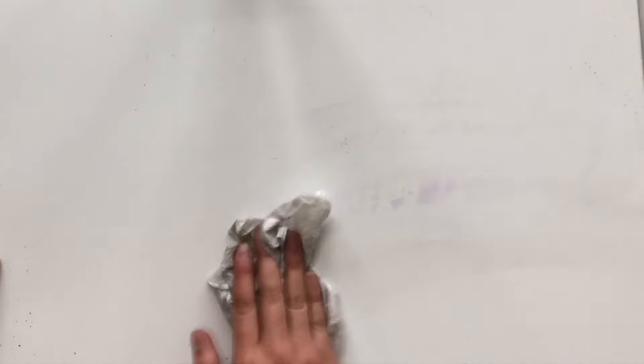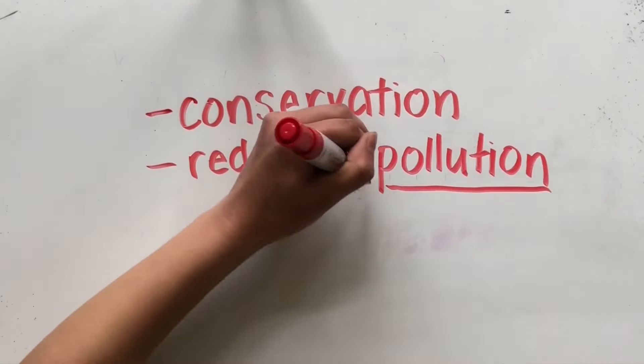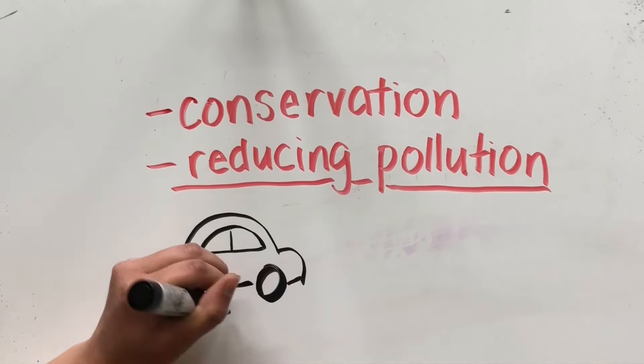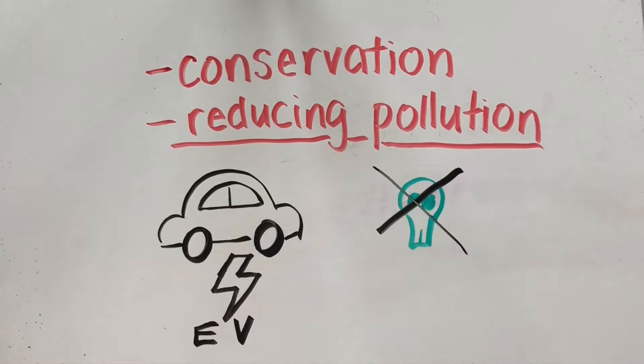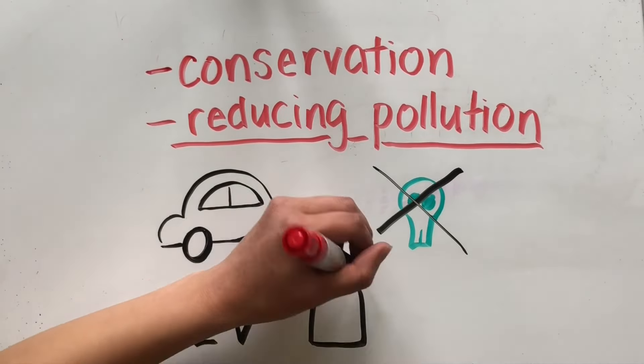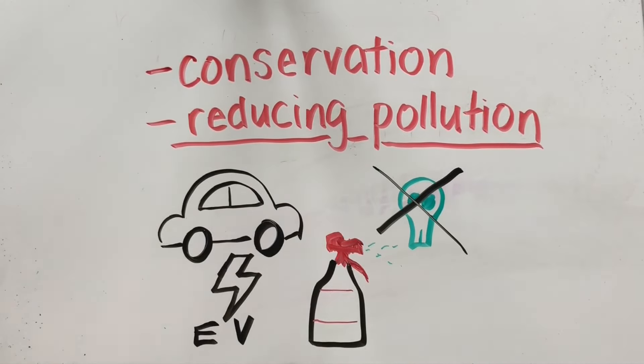Another way you can help save our water supply is by reducing pollution, whether it be by switching to an electric vehicle, limiting your usage of different chemicals, and stopping the dumping of waste.